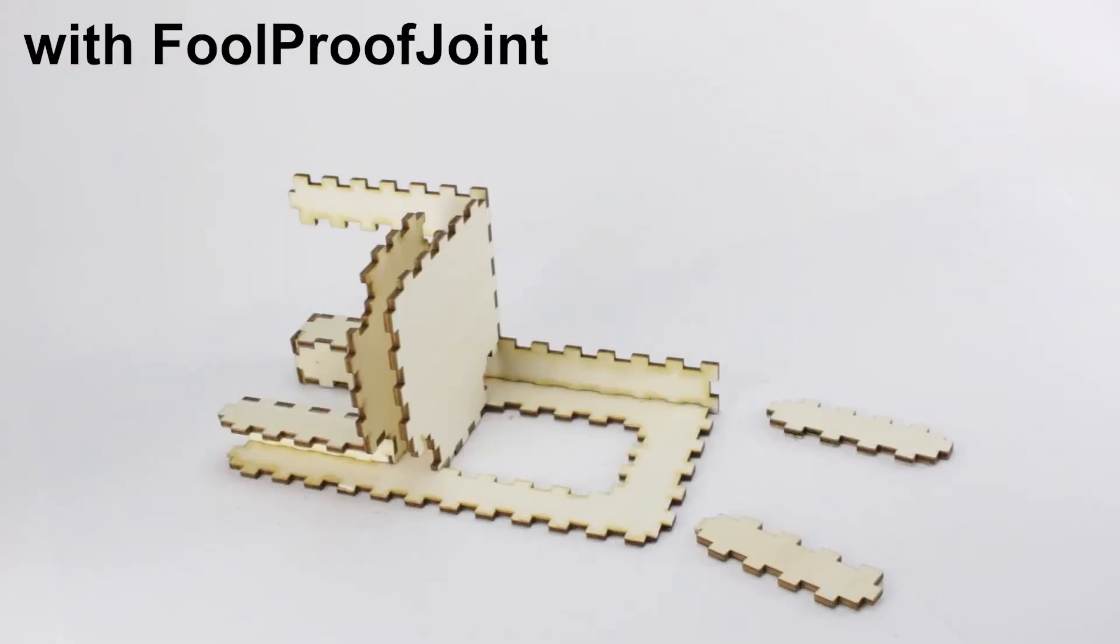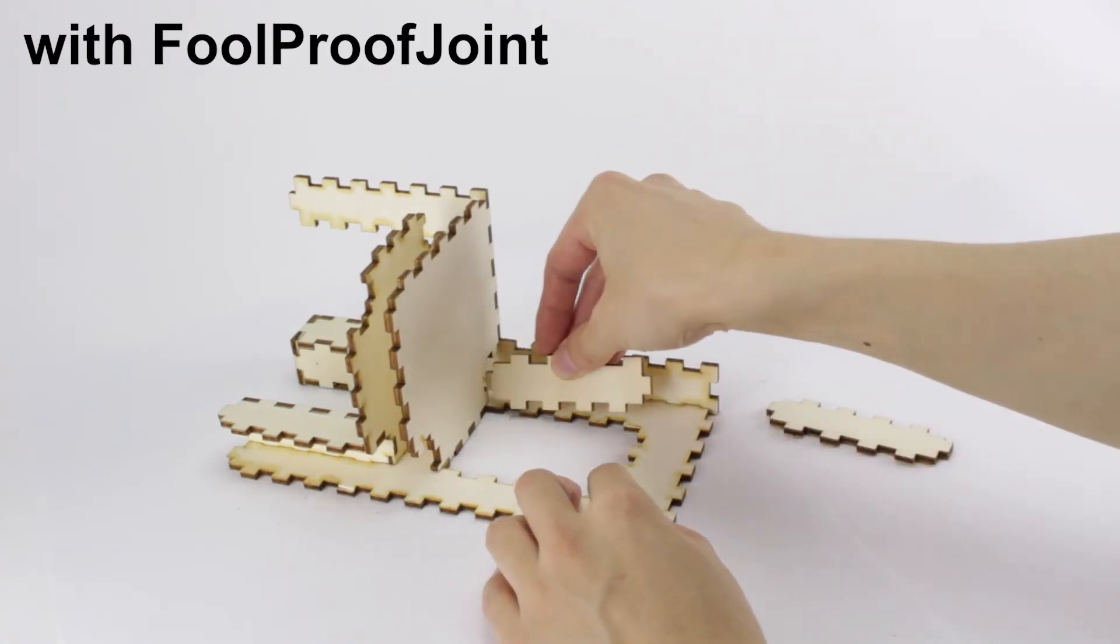FoolProofJoint addresses these assembly mistakes by giving each joint pair a unique finger pattern, which assures that incorrect pieces never fit.